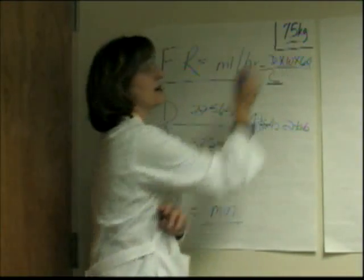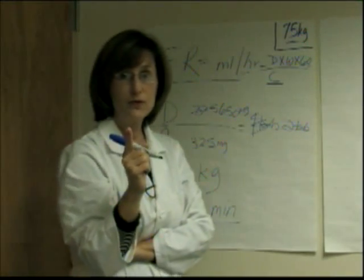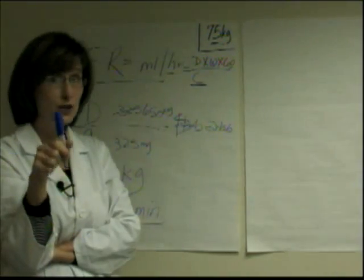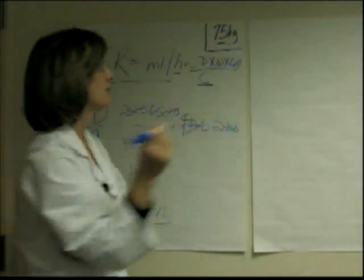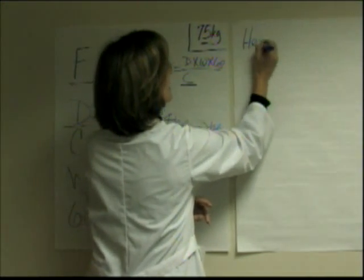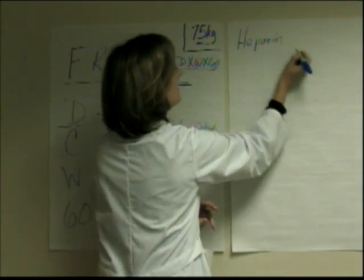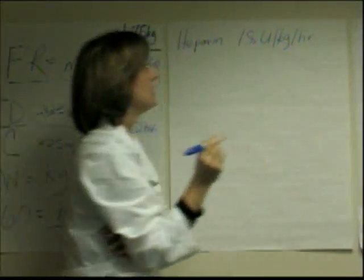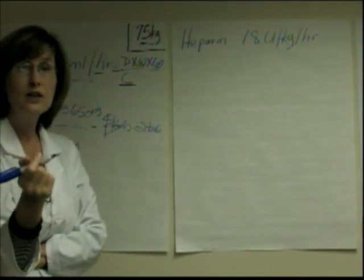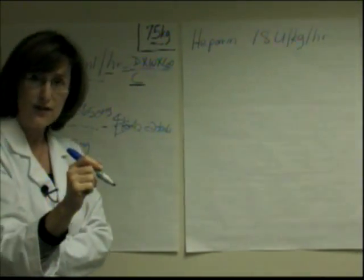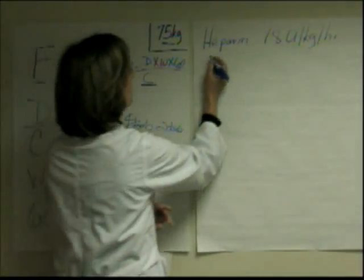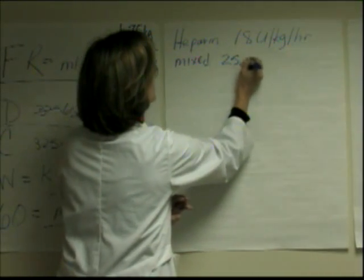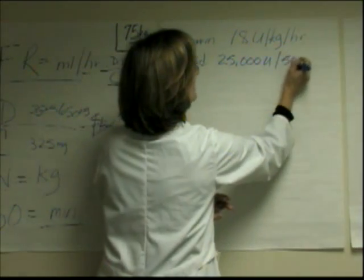For all of our problems today, our patient weighs 75 kilograms. In our course we will always give you the patient's weight — you need to decide if you're going to use it or not. Let's start with a heparin example. Let's say heparin is ordered at 18 units per kilogram per hour. You need to know the patient's weight and the concentration of heparin in the bag. Let's say it's mixed 25,000 units in 500 milliliters.